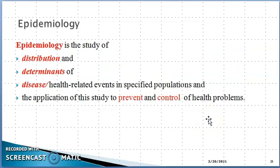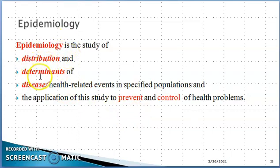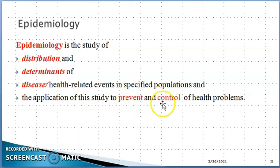Epidemiology is the study of distribution and determinants of disease and health-related events in a specific population, and the application of this study — our purpose, why are we doing this study of epidemiology, why are we doing distribution, factors, and disease numbers in a specific area and specific population? Our purpose is that we can take prevention and control of disease.